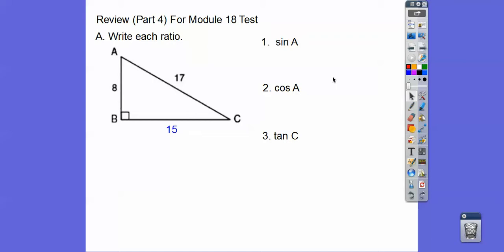So now we can find the sine of A. Sohcatoa, S-O-H, sine is opposite over hypotenuse. So here's angle A, so here's the opposite side, here's the hypotenuse, so it's 15 over 17. And that's all they need, the ratio. It doesn't say find the angle, it says write the ratio.